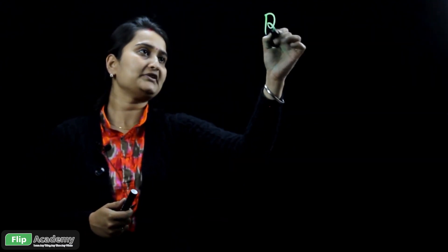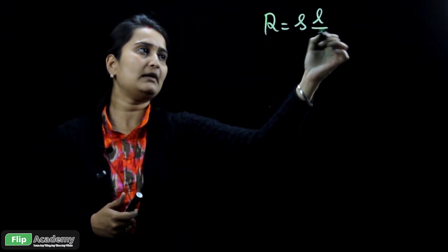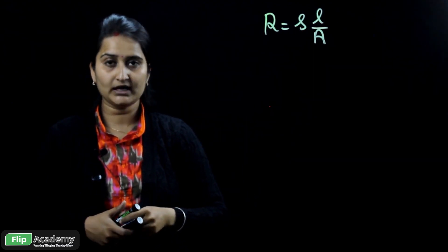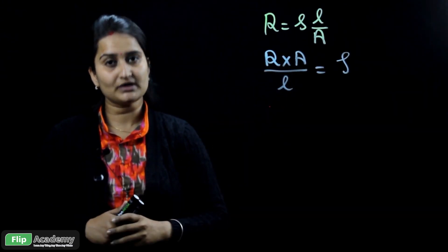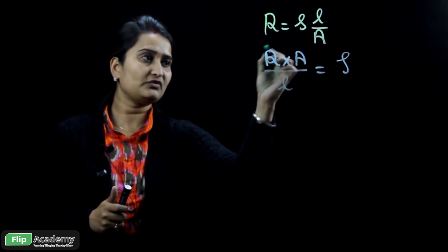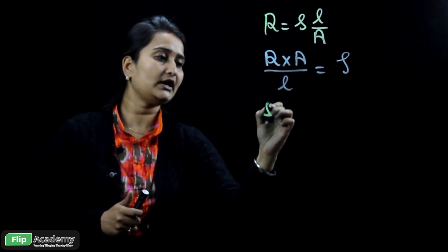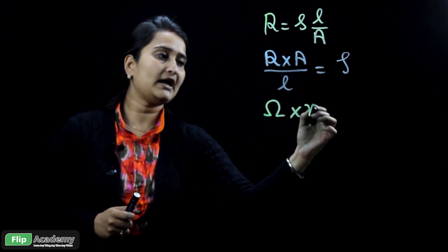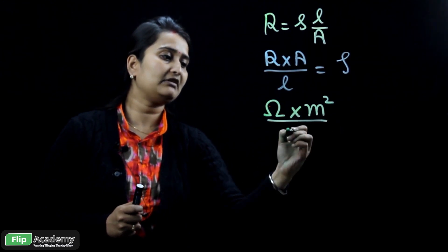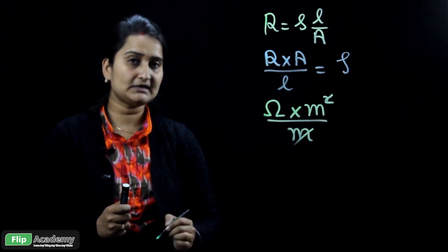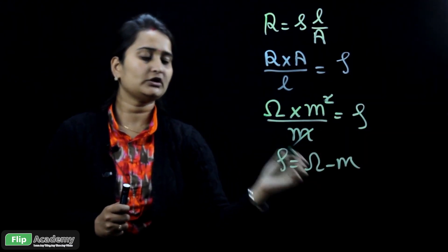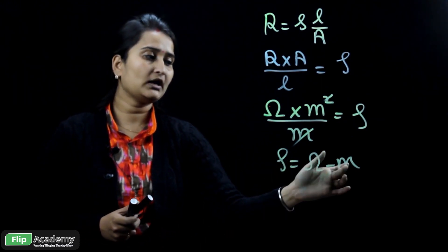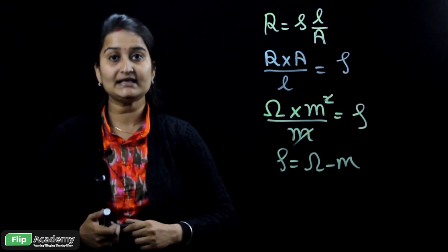Now let's calculate the unit of resistivity. The formula for resistance is R equals ρ × L upon A. Rearranging, ρ equals R × A upon L. We know that resistance R has the unit Ohm, area has the unit meter square, and length has the unit meter. Cancelling one meter, we get the unit Ohm meter. So the unit of resistivity is Ohm meter. This is how resistivity is defined.